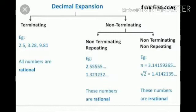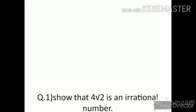So, when you divide any fraction, you get three types of decimals: first, terminating; second, non-terminating recurring; third, non-terminating non-recurring. Now we are going to start practice set 2.2.